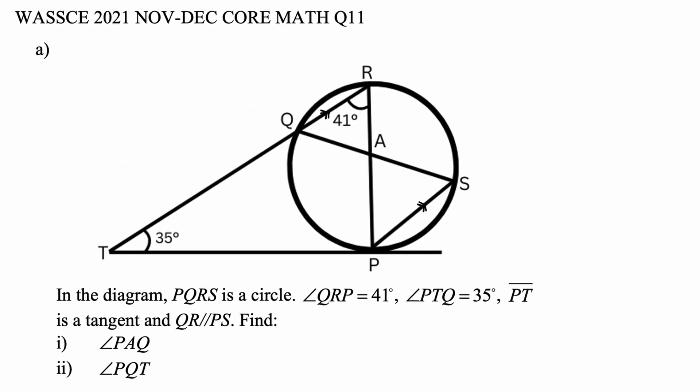In the diagram, PQRS is a circle. The angle QRP is equal to 41 degrees. The angle PTQ is equal to 35 degrees. The line PT is a tangent and QRS is parallel to PS. Find: I, the angle PAQ; and II, the angle PQT. So let's begin with our solution.